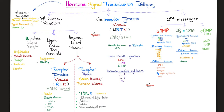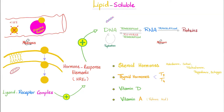It's the hormone signal transduction pathways. We talked about all of this in great detail in my endocrinology playlist — today we'll mention them briefly. For lipid-soluble hormones: the hormone diffuses, reaches the nucleus, hormone receptor elements activate your DNA, then transcription to make RNA, then translation to make proteins. This applies for lipid-soluble hormones as well as vitamin D and vitamin A, because they are also lipid-soluble vitamins.